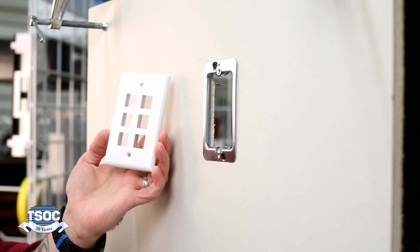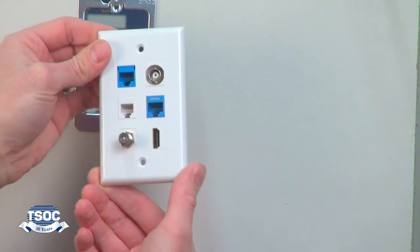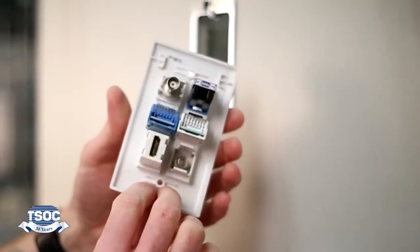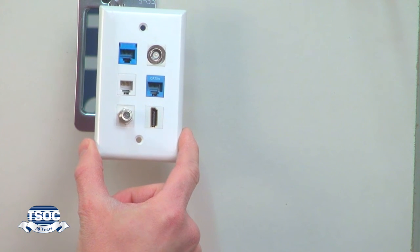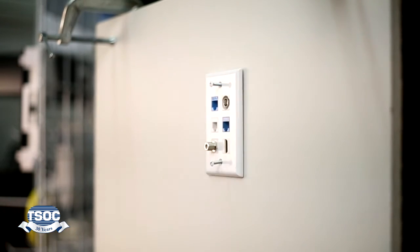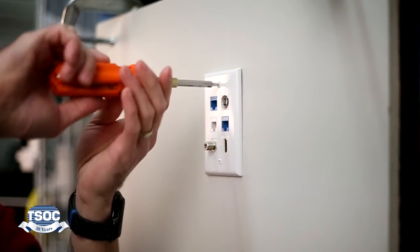Step 4: Load the single gang keystone wall plate with the desired voice, data, or video keystone module and terminate or insert the corresponding cables. Then install the wall plate over the mounting bracket and insert the screws by hand. Continue to tighten using a manual driver until complete. Do not over tighten.